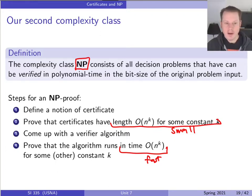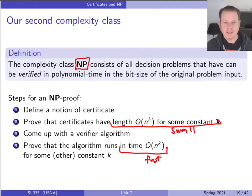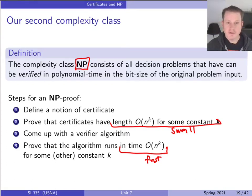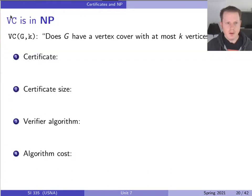Just as a reminder, this is the formal definition of the NP complexity class, and it says that a problem is in NP if there are short certificates and fast verifiers for that problem. So let's be concrete with this now and think about a couple specific problems.